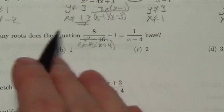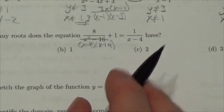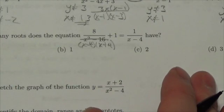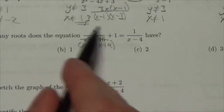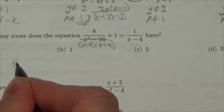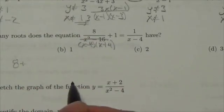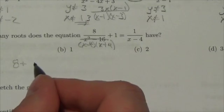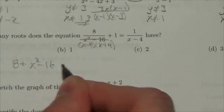If I multiply this entire equation through by x squared minus 16, I should be able to get rid of all the denominators. So if I multiply this first term by x squared minus 16, that would cancel with the denominator, just leaving me with the 8. Now don't forget about this one right here. If I multiply 1 by x squared minus 16, I just get x squared minus 16.